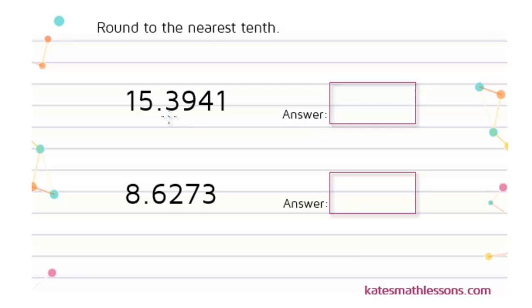So the tenth spot is the first spot after the decimal to the right, so this 3 is in our tenth place. I'm going to draw a line after it.